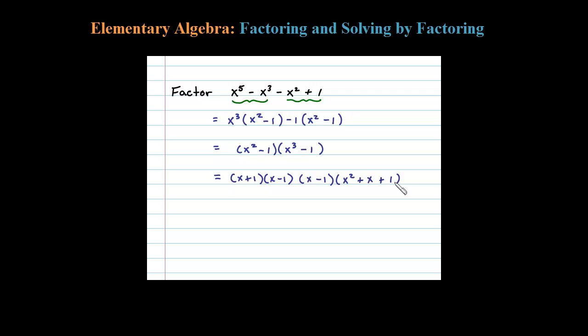So now we're completely factored. We did factor by grouping and were left with difference of squares and difference of cubes. Difference of squares broke up as two binomials like that, and then difference of cubes factored into these two factors, and we're done.